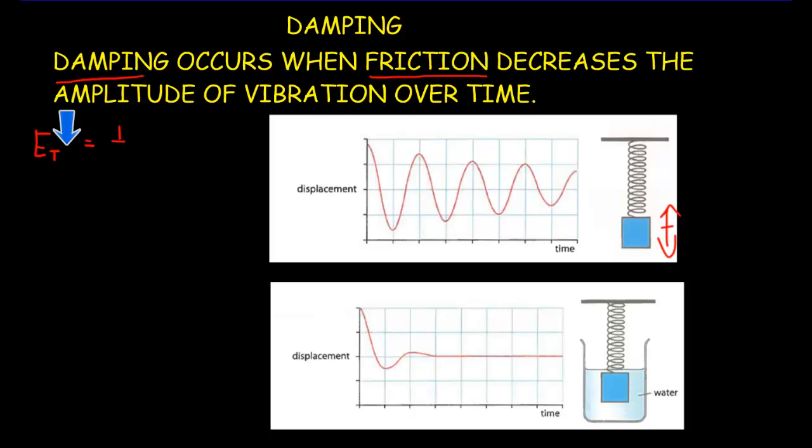And since our total energy in a mass spring system is ½k times the amplitude squared, that means that our amplitude must be dropping as well. And you can see that in the diagram. Here's our original amplitude, and then our amplitude becomes this value and then this value, so the amplitude keeps decreasing.